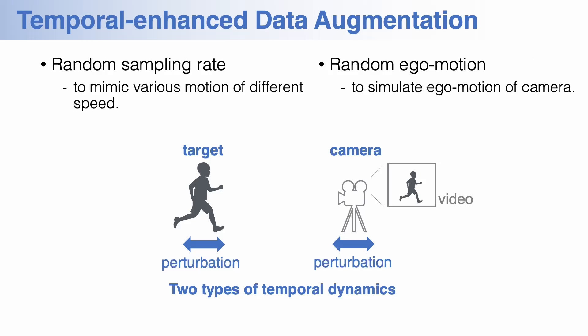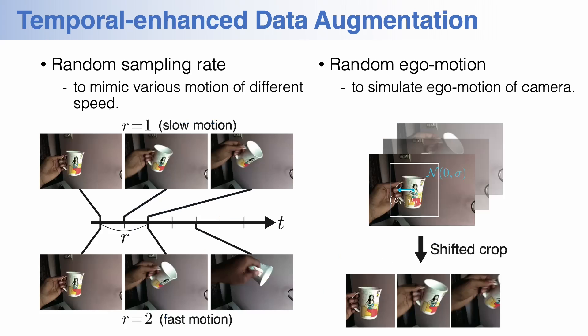We also apply simple data augmentation to enhance temporal robustness. There are two types of temporal dynamics derived from the target and the camera which capture the target actions. For these two dynamics, we can consider data augmentation techniques respectively. One is random sampling rate to mimic various target action speeds. The other is random ego-motion to simulate ego-motion of the camera. By applying these two types of data augmentation to training 3D CNNs, the model can learn robust feature representation against these perturbations.